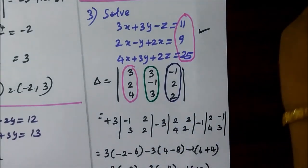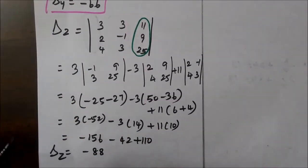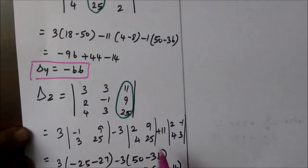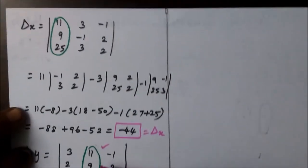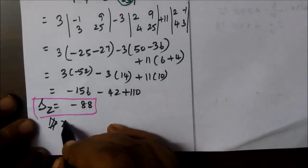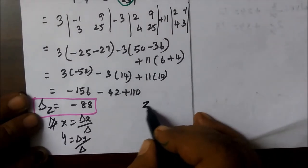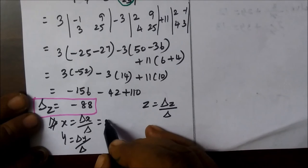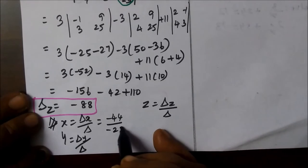We will change the constant in the same place. Del x is the first card, then the 3rd card, then the final card. Del x. So the value is: x is equal to del x by delta, y is equal to del y by delta, z is equal to del z by delta. So, if we replace the value, we need minus 44 by minus 22, which is 2.